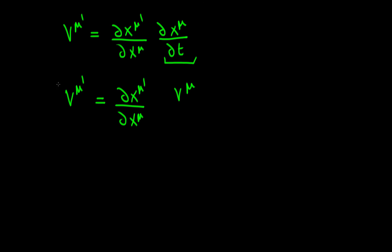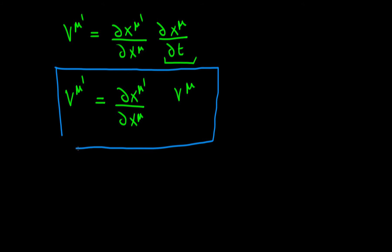This relationship is the definition of how a vector behaves — it transforms exactly like this. Note that in doing this, we are only considering the components of the vector. The vector itself doesn't depend on the particular coordinates we use; we are looking at the components.